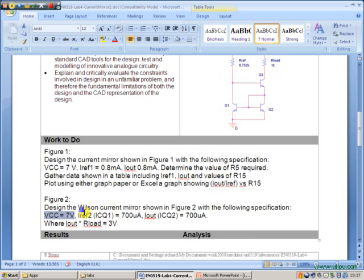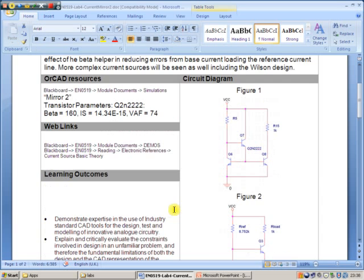Your design task is VCC 7 volts, output current and reference current 700 micro. I also want you to calculate the load value so that you get 3 volts DC at the output node.